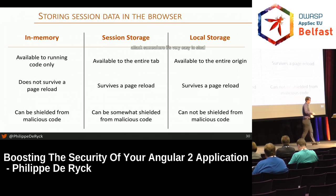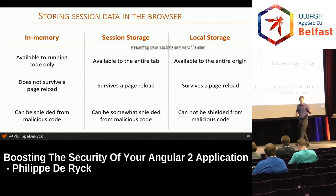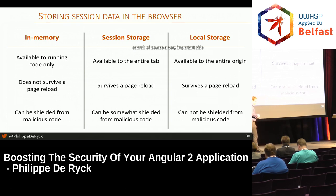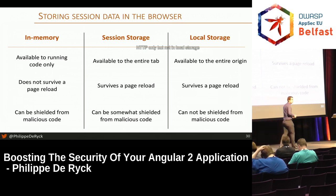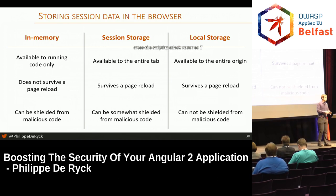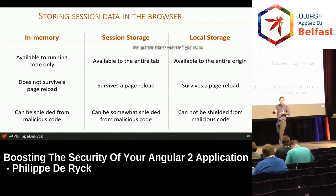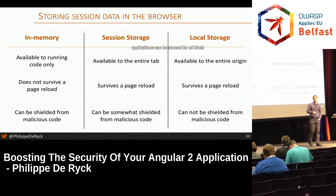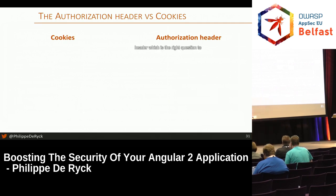Stealing local storage is one of the common injection vectors for cross-site scripting — it used to be stealing cookies, now it's also stealing local storage data. A very important side note: people say you can hide something in cookies with HTTP-only, but not in local storage. Keep in mind that if someone's stealing your local storage through XSS, you already have a major problem — you're only stopping one of the attack vectors, but the XSS hole is still there and can be abused in all kinds of ways.